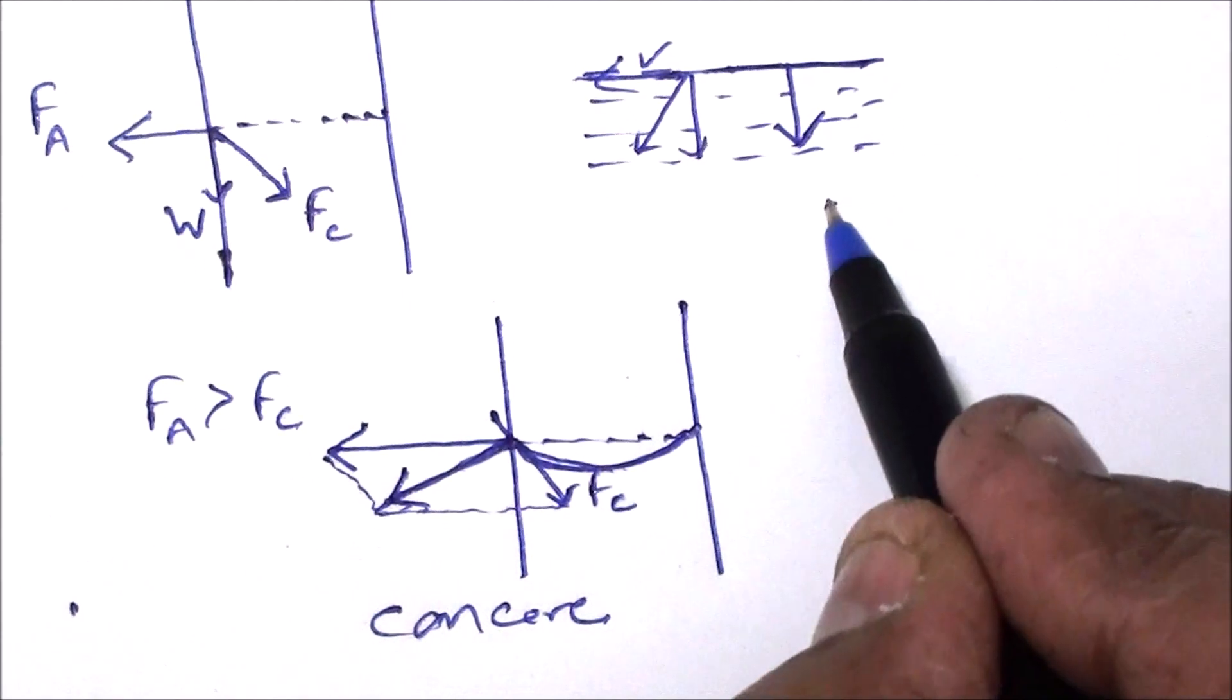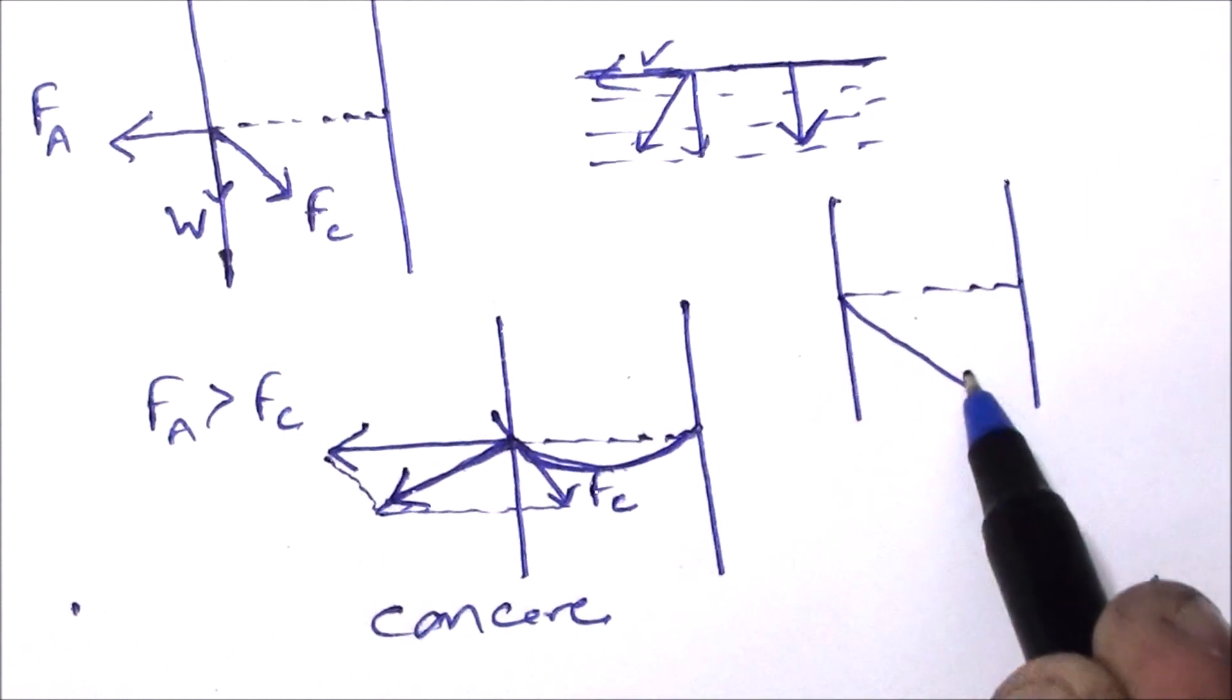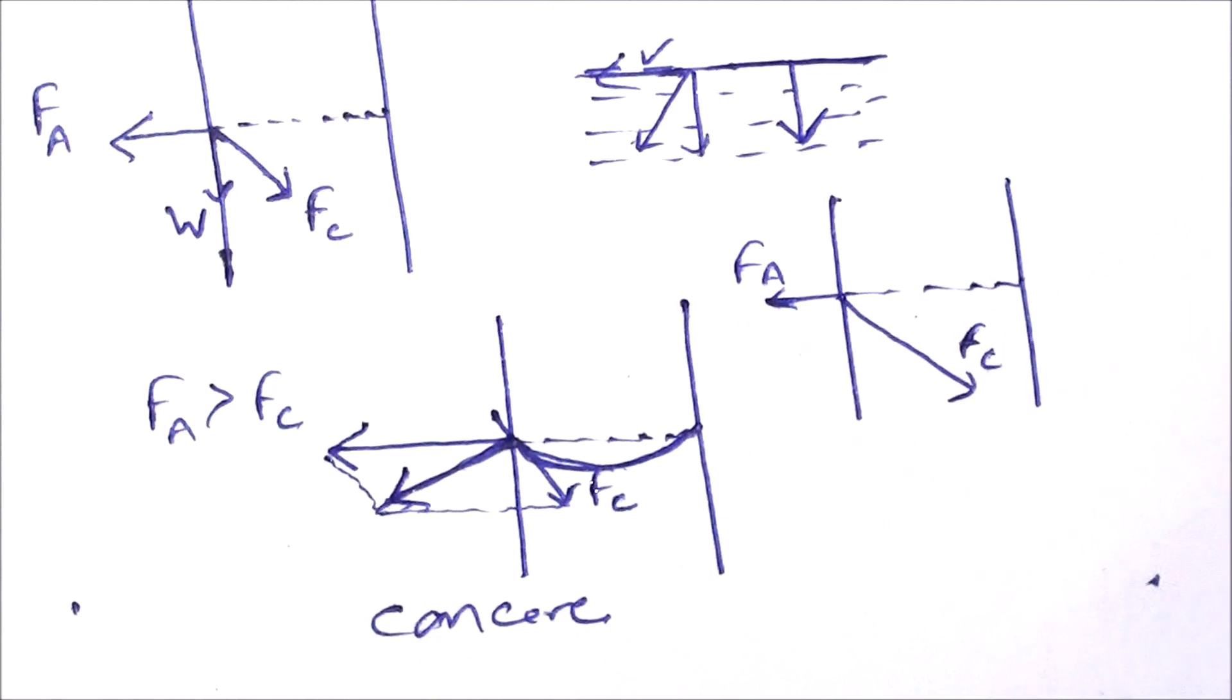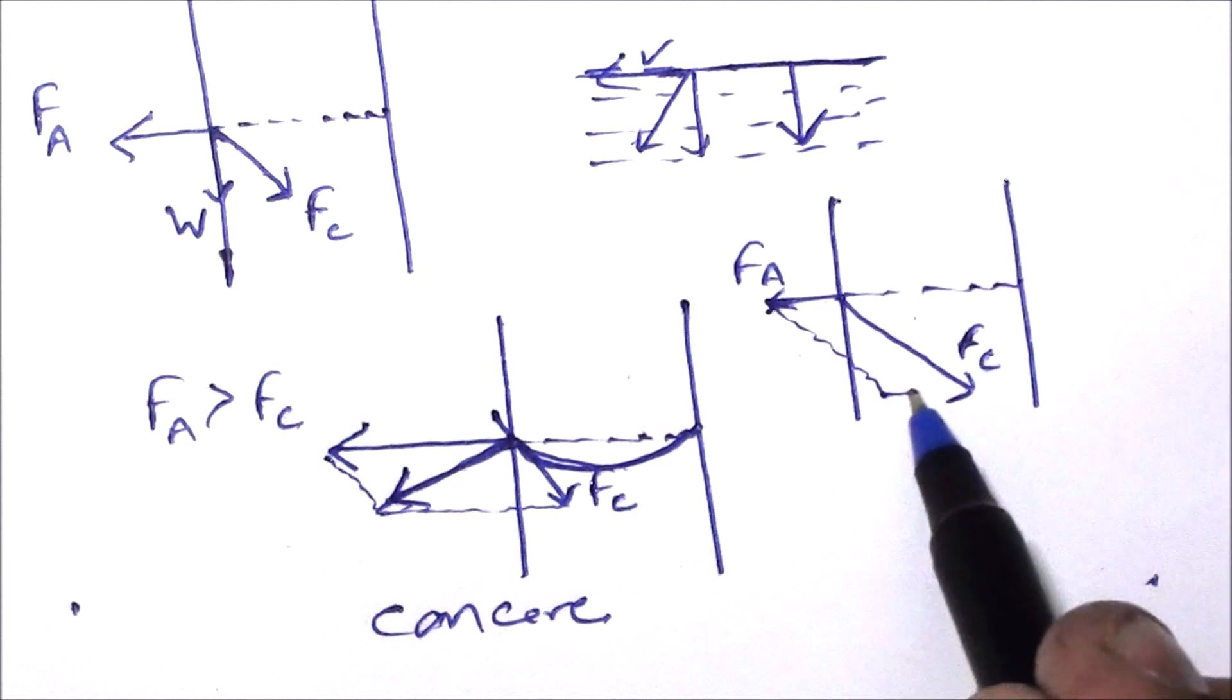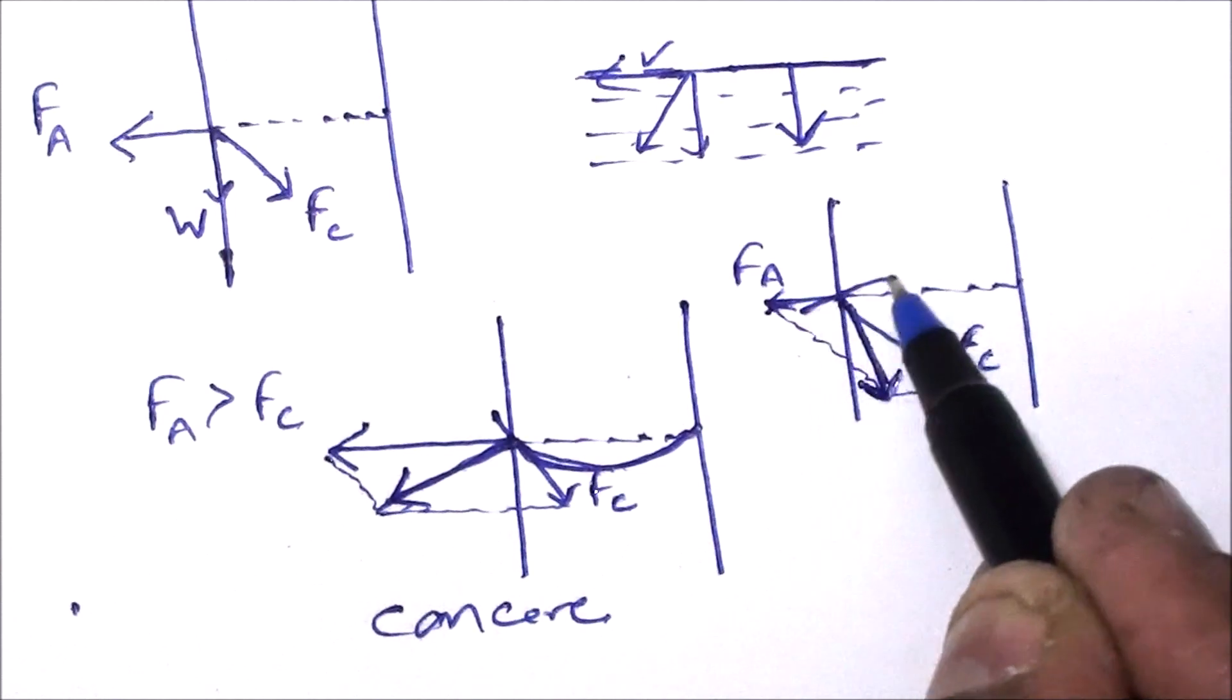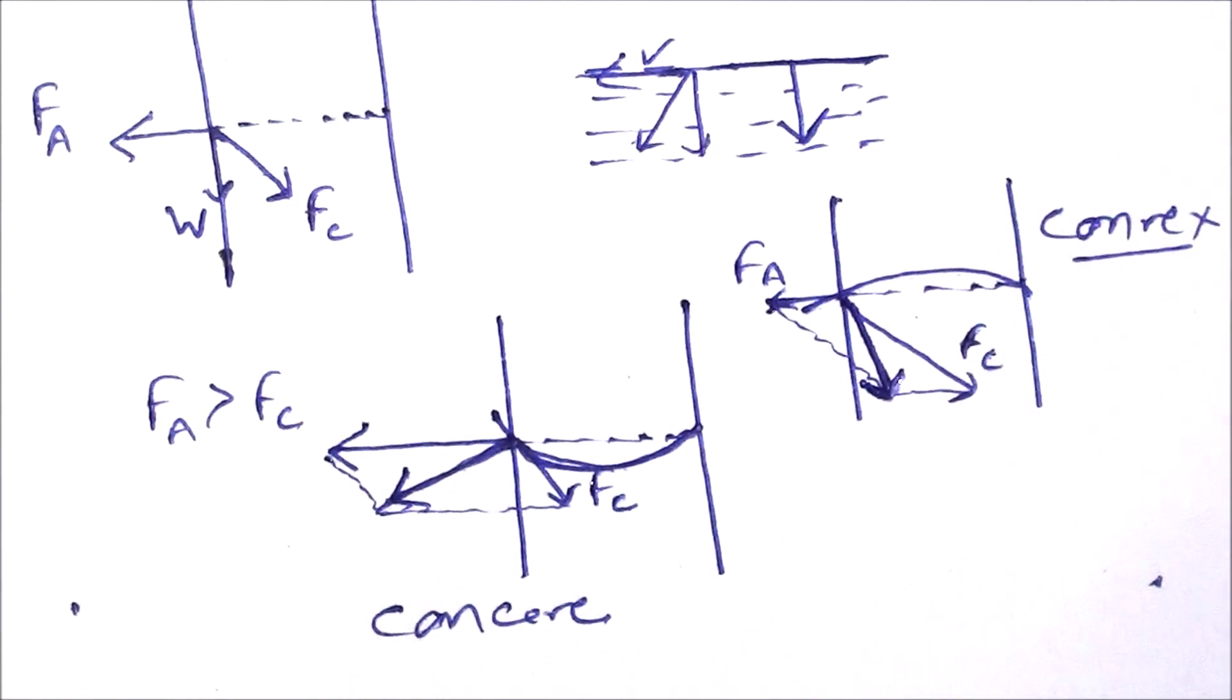Another case may be when Fc, the cohesive forces, are stronger and adhesive forces are weaker. Then the resultant will be this and the liquid surface will be perpendicular to this. It means the liquid meniscus will be convex.